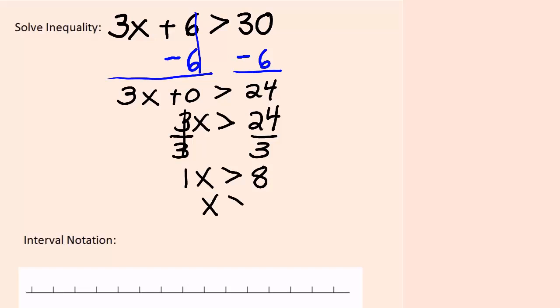Since 1 times x is x, this will be x is greater than 8. In other words, x is going to be any number greater than 8, but not including 8, because this is a strict inequality.